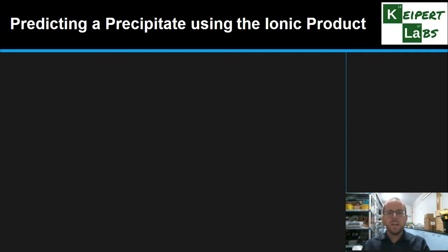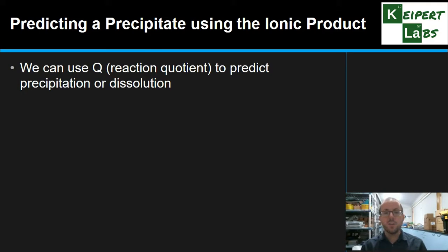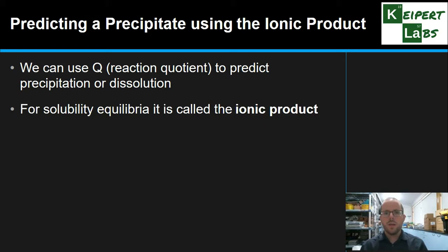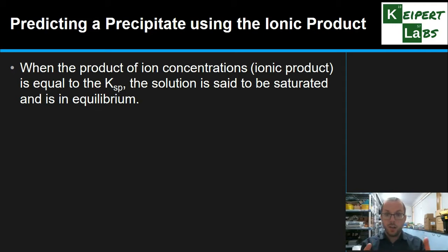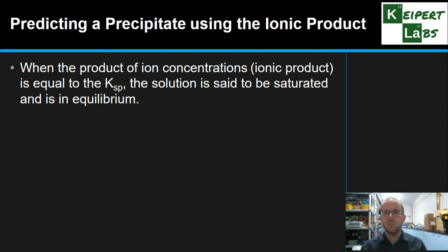Now we're going to look at how we can use this KSP number to predict whether a precipitate is going to form for a particular solution. We've looked at the reaction quotient Q to predict whether a system will shift forwards or reverse to reach equilibrium — we can do the same thing for this type of equilibrium. Instead of Q, we call it the ionic product because we're dealing specifically with ions. When the product of the ion concentrations — the ionic product — equals KSP, the solution is saturated and at equilibrium. No more will dissolve; the maximum has been reached.